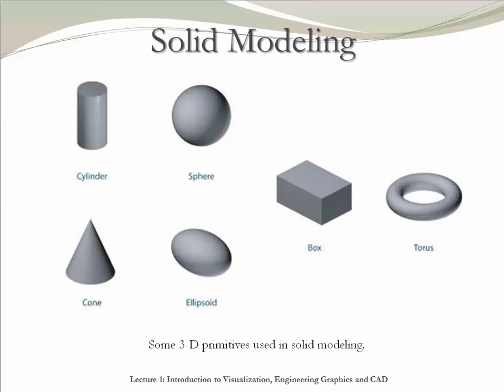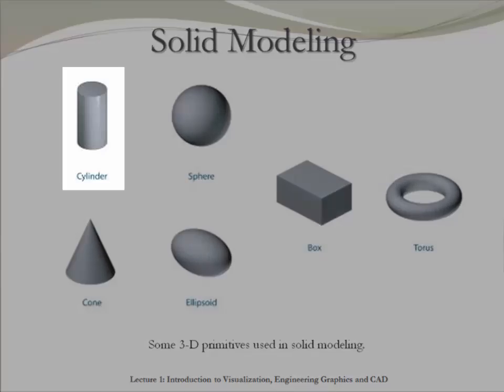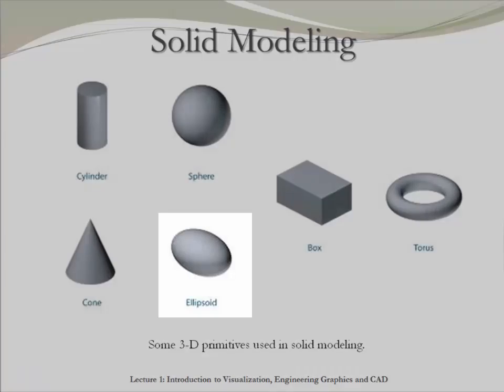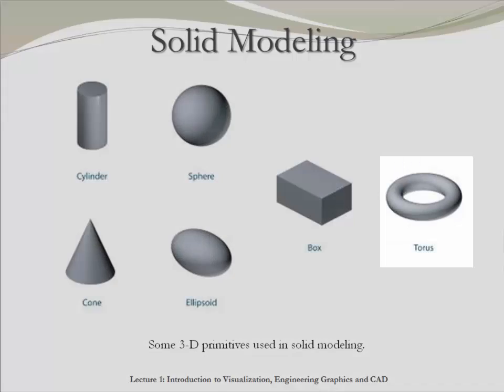In three-dimensional CAD, the main tools are cylinder, sphere, cone, ellipsoid, box, and torus. All these are derived from the two-dimensional tools that we just mentioned.